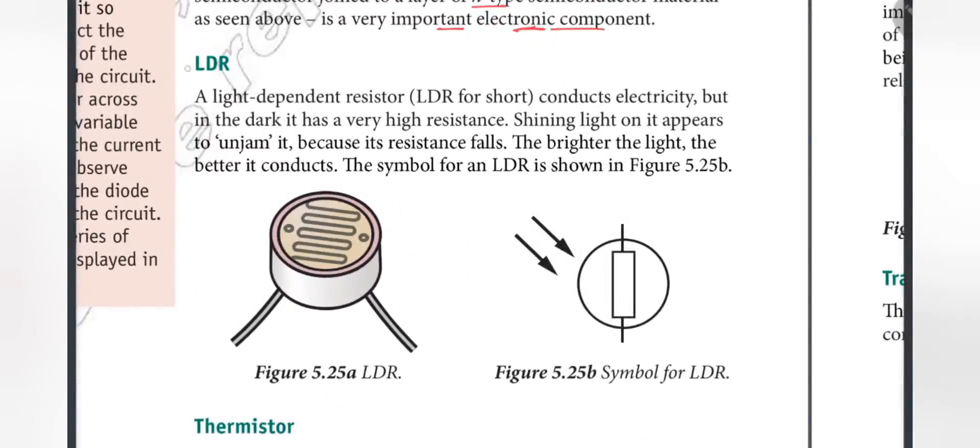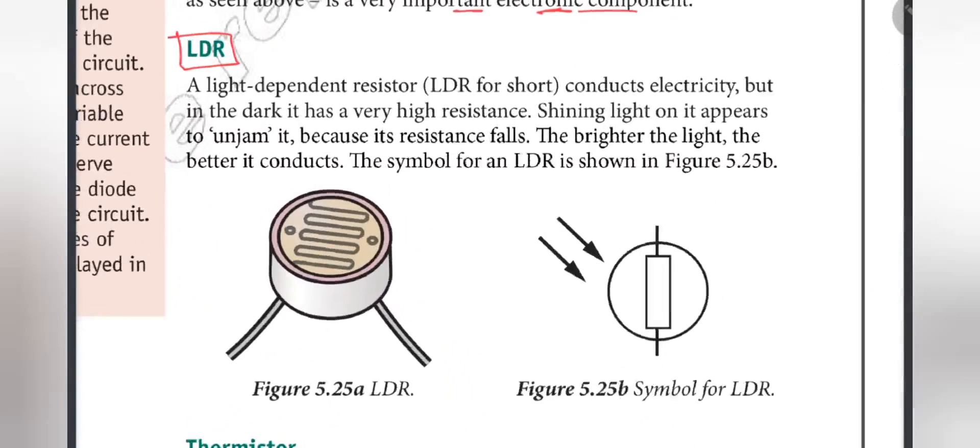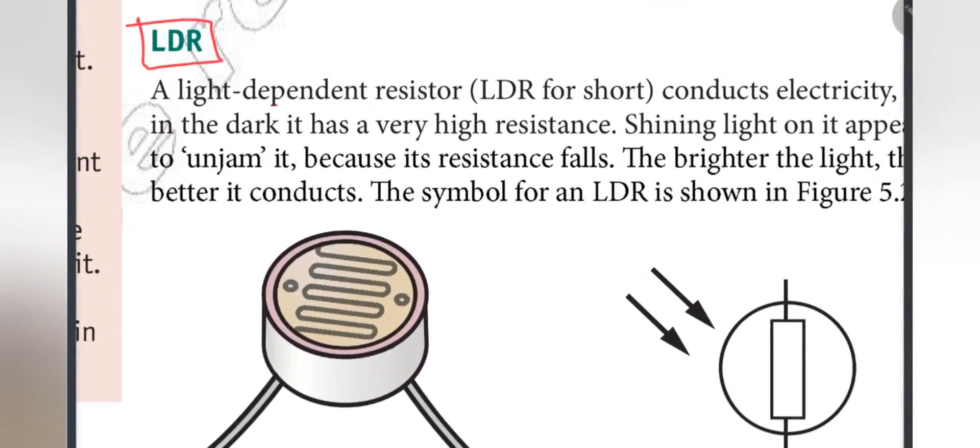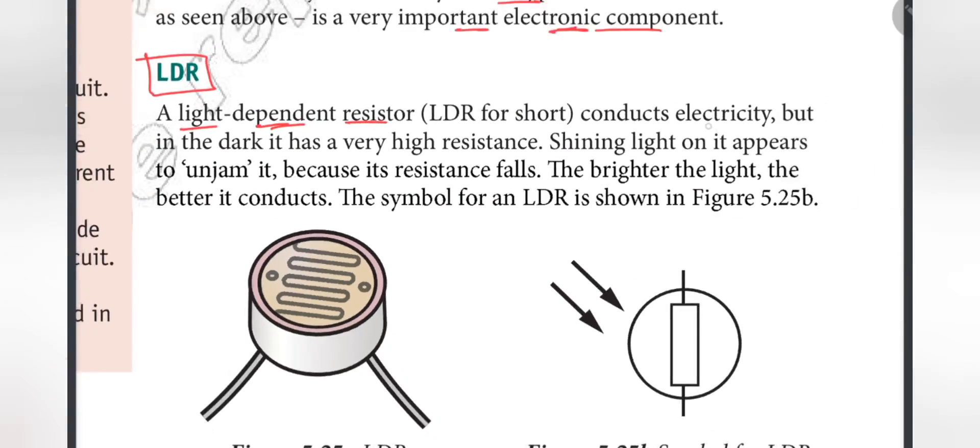The LDR is the light-dependent resistor. LDR is the abbreviation, conducts electricity. But in the dark, it has a very high resistance. The LDR is not the light, but the electricity is the same.